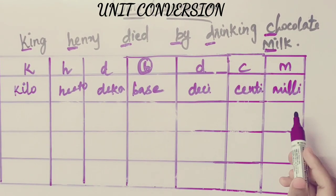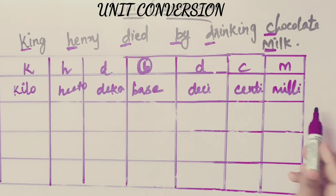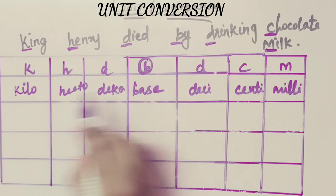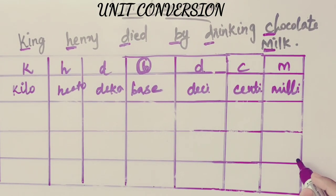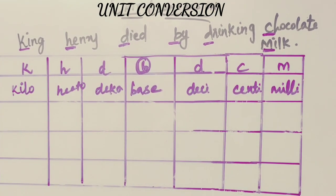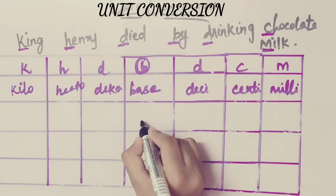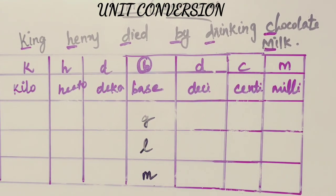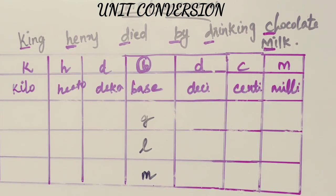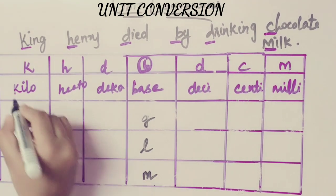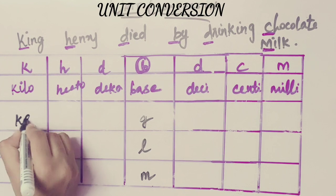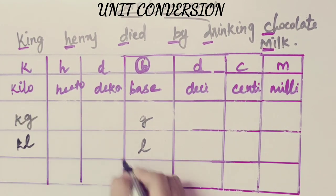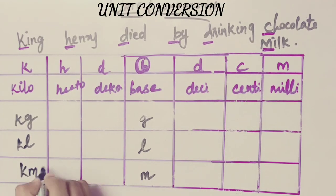This is easy for us to learn. What we can do is memorize the first letter. In the base unit: K is kilogram (KG), kiloliter (KL), kilometer (KM).